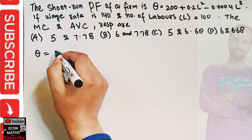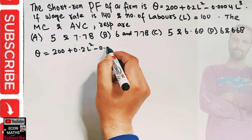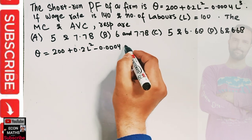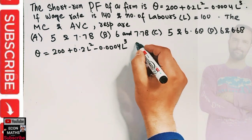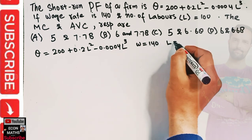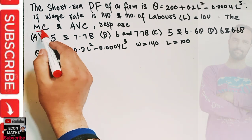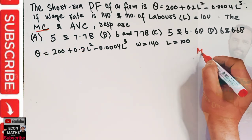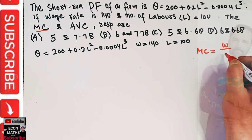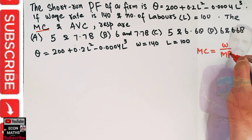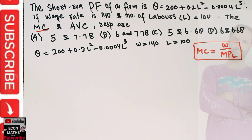We have the production function q = 200 + 0.2L² minus 0.0004L³. Our wage rate is 140 and the number of laborers is 100. Now, how do we calculate the marginal cost? Marginal cost is simply equal to wage rate divided by the marginal product of labor. This is the formula for calculating marginal cost.